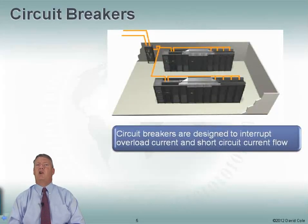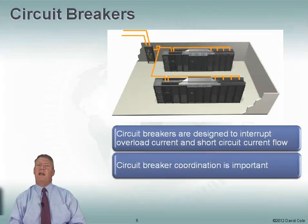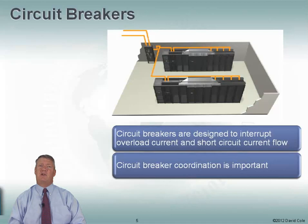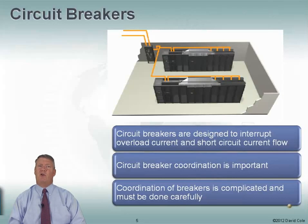It's really important that we coordinate circuit breakers inside the data center. These circuit breakers are designed to interrupt overloads and short circuits. Coordinating them is important because we want the circuit breaker to blow — or pop, as it's sometimes called — as close to the equipment as possible. We want the least amount of equipment to come down when a circuit breaker pops. So it's complicated to do this and must be done carefully. I'm going to walk through an example of how this circuit breaker coordination happens.